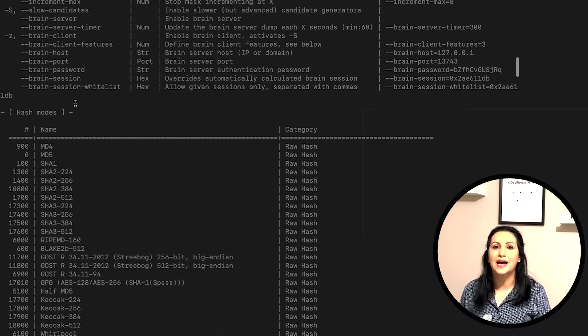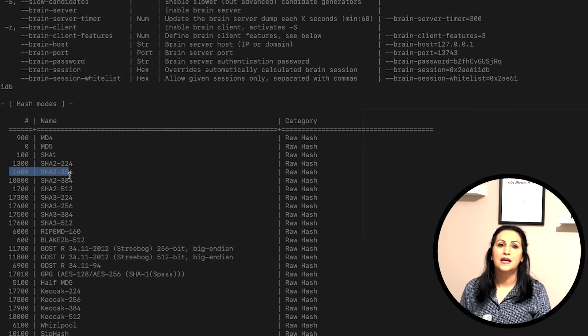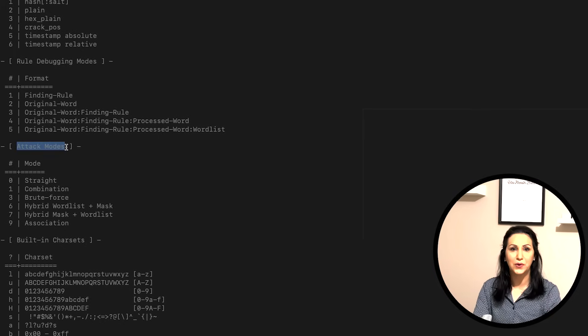Let's scroll down and see the options for hash mode. For example, MD5 is number 0, SHA-256 is 1400. In attack mode, there is a related number for each attack mode. We use straight in our example today.